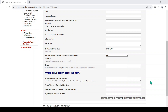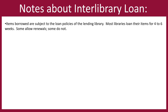You will be notified via Fairmont State email and/or by phone when the material you requested is received. Items borrowed are subject to the loan policies of the lending library. Most libraries loan their items for four to six weeks. Some allow renewals, some don't.